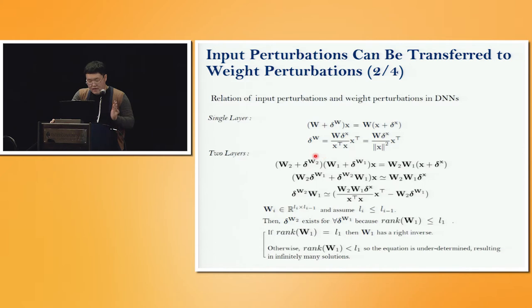By simplifying these two delta terms to zero, because they are very small terms, we get this nice formulation. And our goal is to find delta W2 for all delta Wx and delta W1.